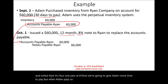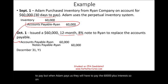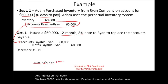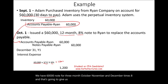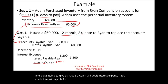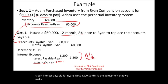On December 31st of year one, Adam must accrue interest on the note. The note has been outstanding for three months — October, November, and December — so interest is $60,000 × 8% × 3/12 = $1,200. Adam debits interest expense $1,200 and credits interest payable $1,200. This is the year-end accrual adjustment.